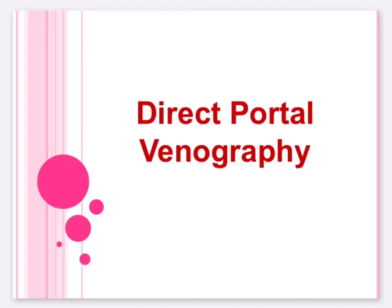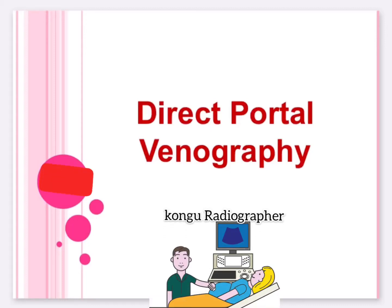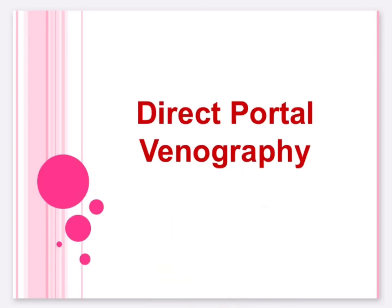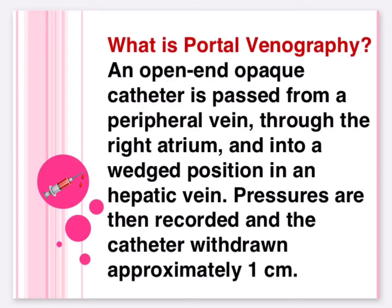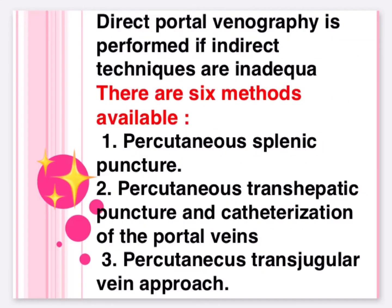Welcome to the Konga Radiographer channel. Today's topic is direct portal venography. An opaque catheter is passed from a peripheral vein through the right atrium and into a wedged position in a hepatic vein. Pressures are then recorded and the catheter is withdrawn approximately one centimeter. Direct portal venography is performed if indirect techniques are inadequate.